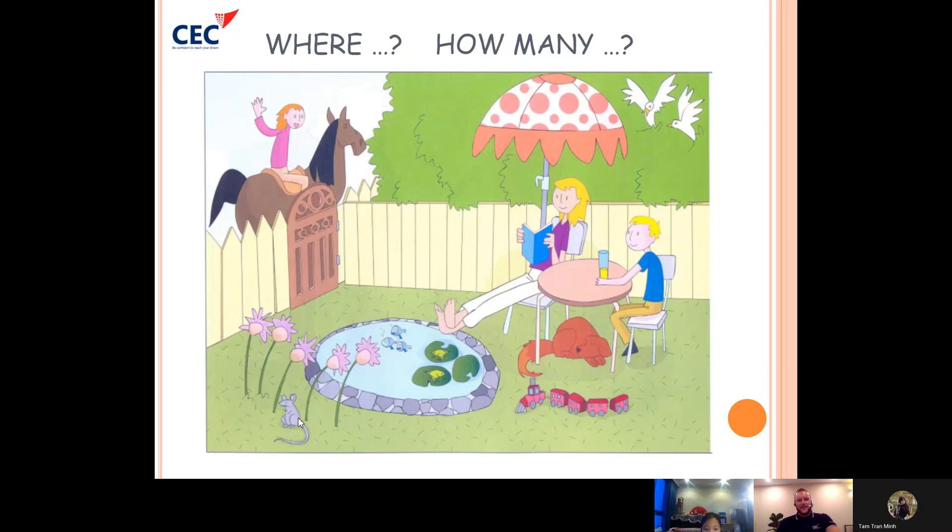Where is the mouse? The mouse is behind... flowers. Yes, in front of the flowers. Where is the dog? The dog is under the table.